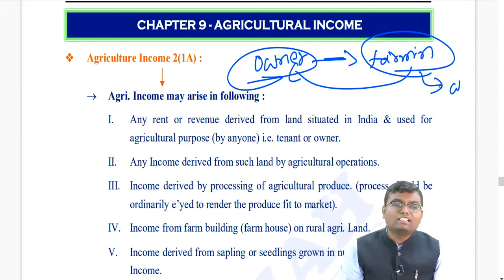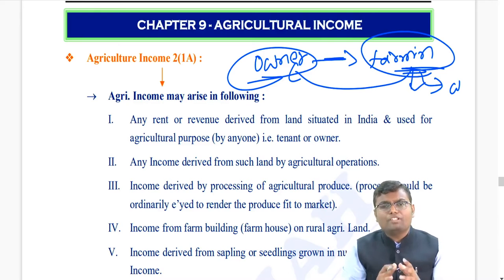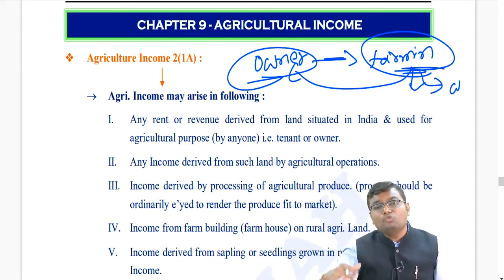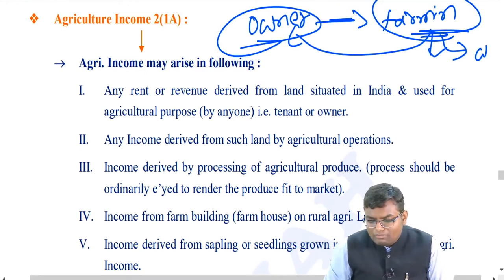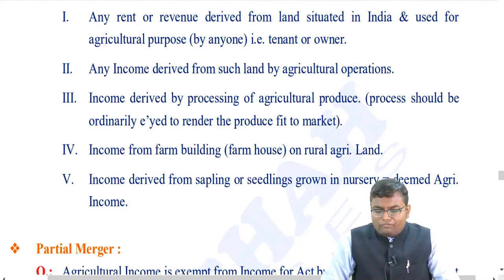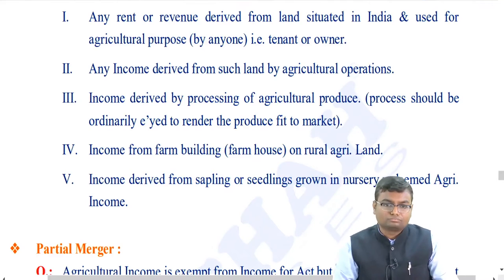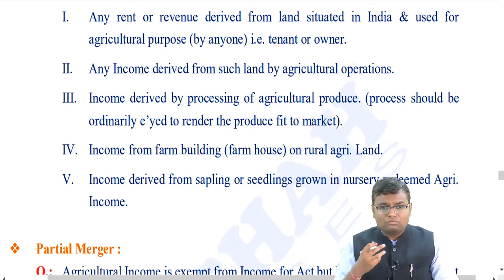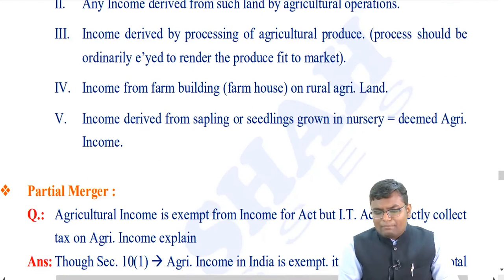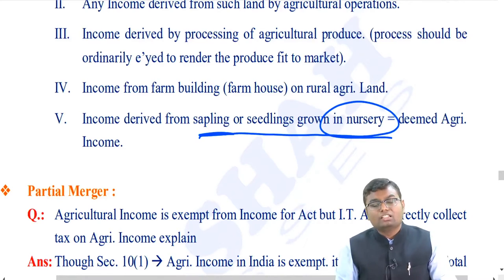If you give the product to a person who performs basic operations on it — and only after those operations can you sell to the market — whatever fees you pay is also agricultural income. When you sell the product in the market, the sale value received is also agricultural income. In summary: rent or revenue from land in India used for agriculture; income from agricultural operations; income from processing agricultural produce to make it fit for market; income from farm buildings on rural agricultural land; and income from sale of saplings or seedlings grown in a nursery — all are agricultural income.